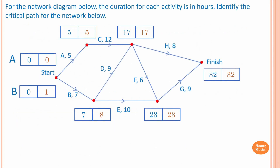Let's identify the critical path for the network below. We have earliest starting time and latest starting time. If you don't know how to find these, please go to the description below and click on the link. To identify the critical path, we need to find activities where float time equals zero — that is, latest starting time minus earliest starting time equals zero.